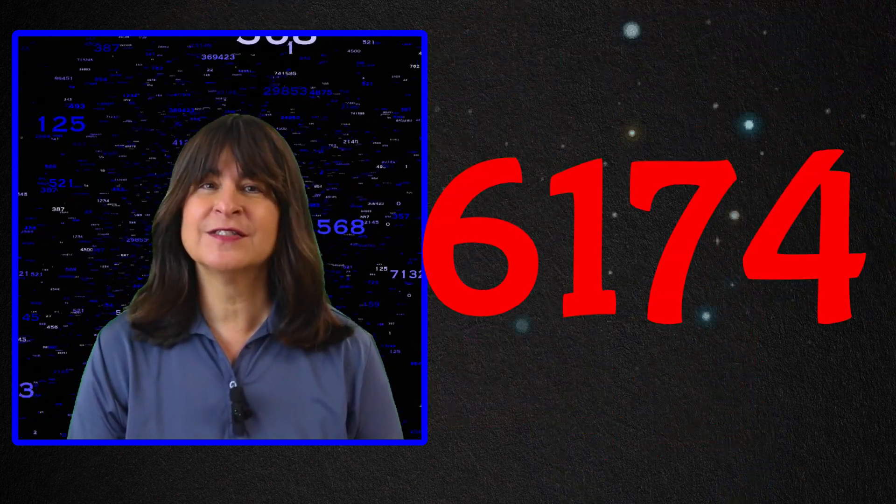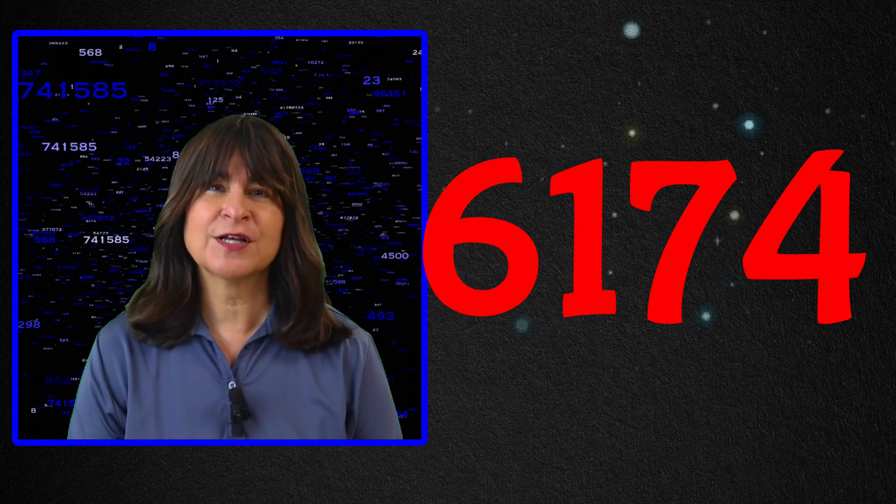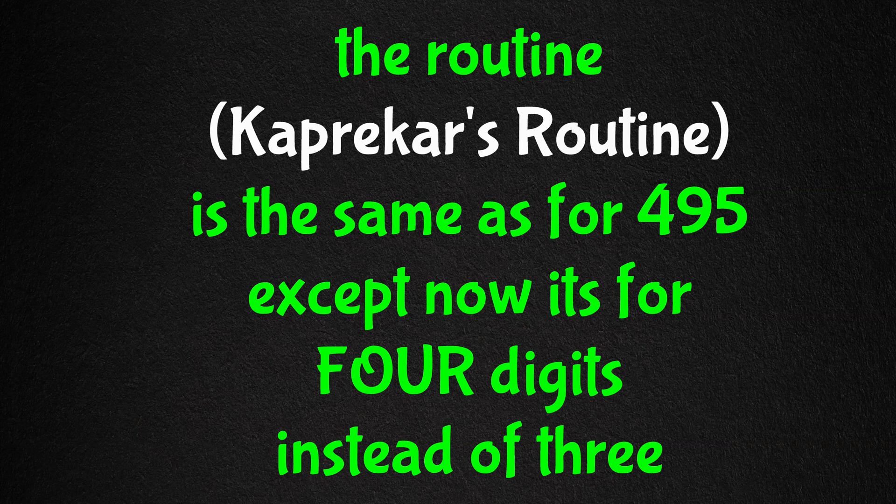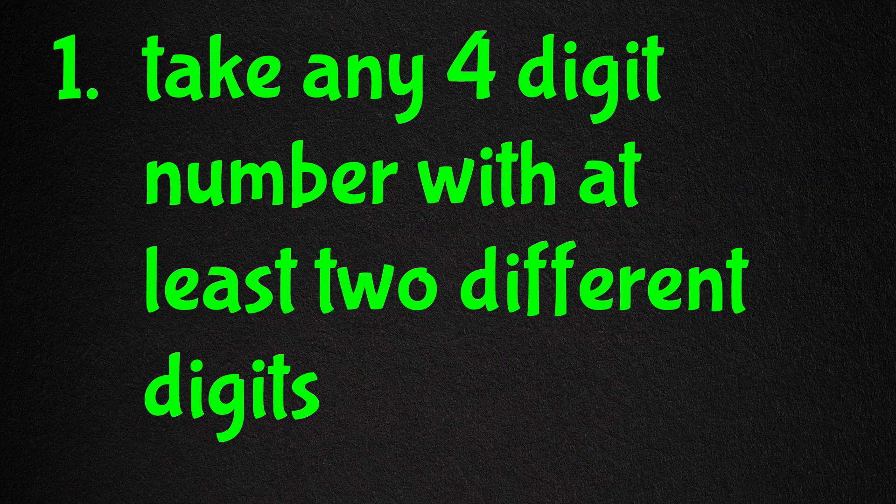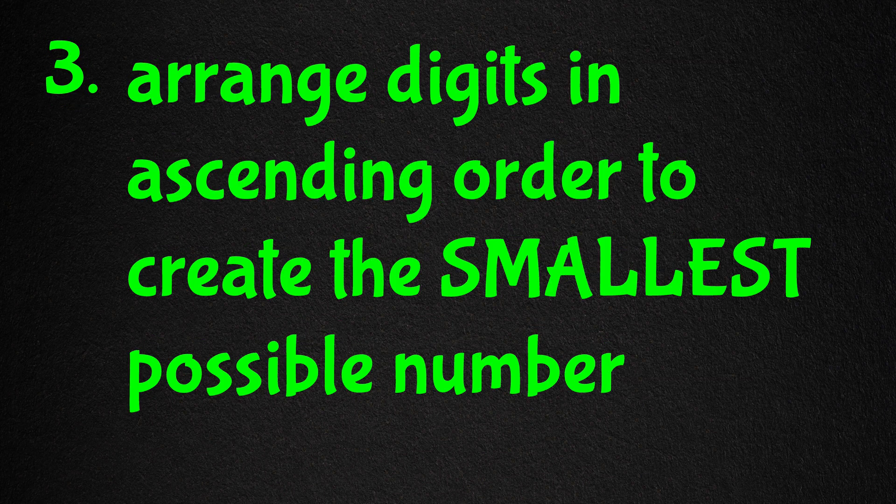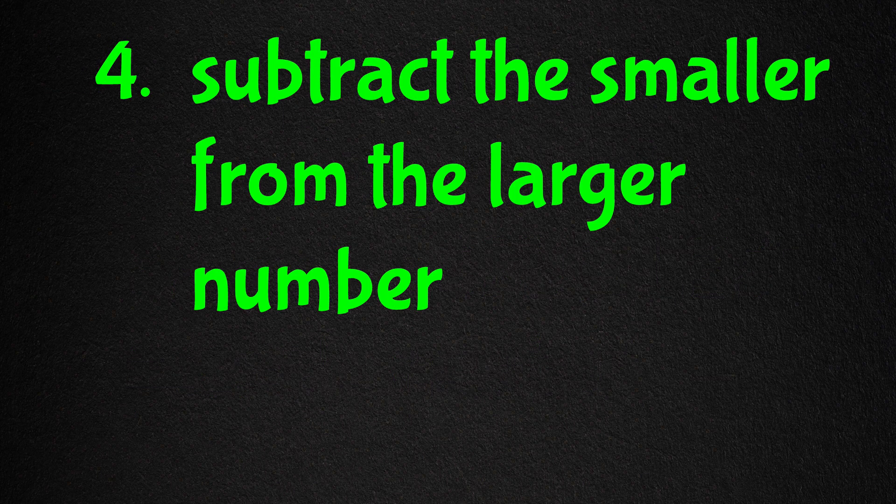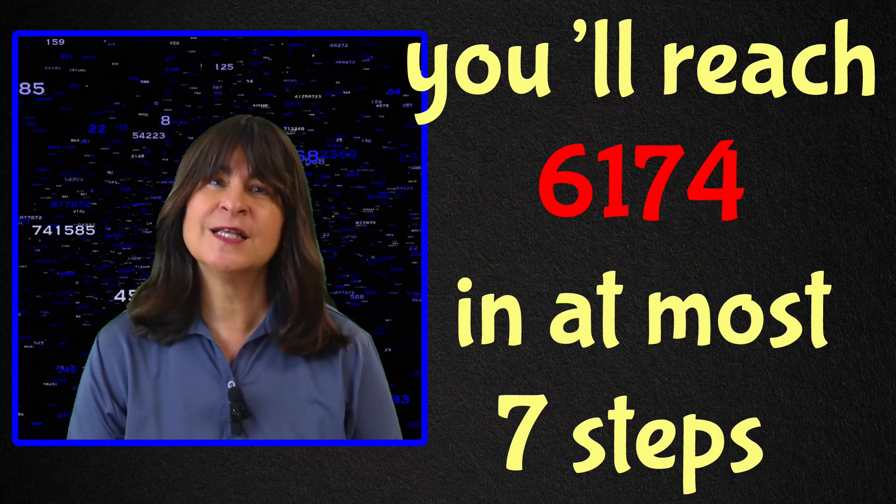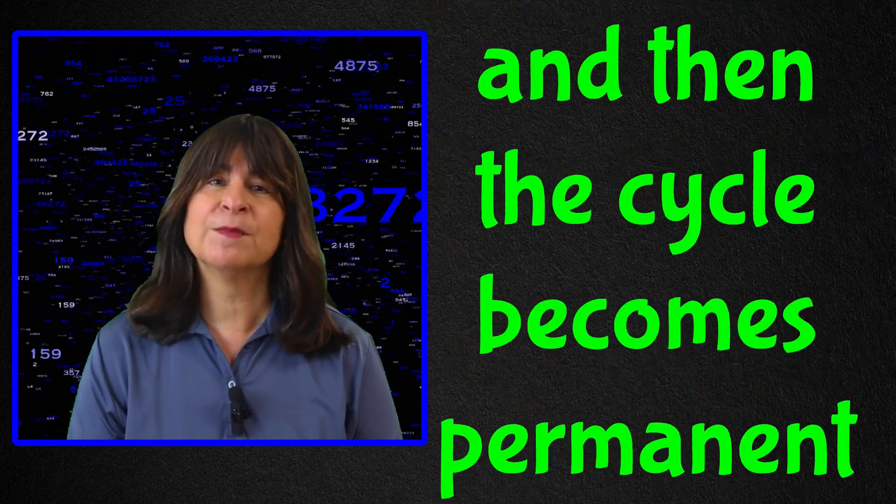Now for the superstar, 6174, known as Kaprekar's constant for four-digit numbers. This number story is even cooler. The routine is the same except for four digits instead of three. Take any four-digit number with at least two different digits. Arrange the digits in descending order to create the largest possible number. Arrange the same digits in ascending order to create the smallest possible number. Subtract the smaller from the larger. And then repeat the process with the result. No matter where you start, you'll reach 6174 in at most seven steps. And then the cycle becomes permanent.